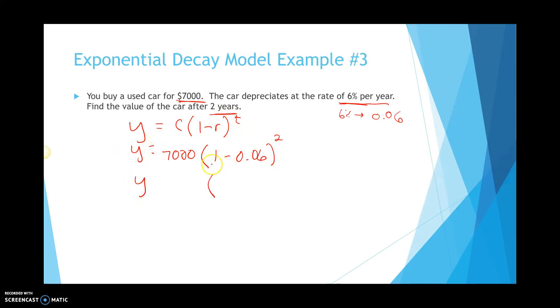Again, I'll subtract 1 minus 0.06 to get 0.94 raised to the second power. And then we would multiply that by 7,000. And you're going to get y is going to be approximately $6,185. If you rounded it to the nearest penny, it's going to be $0.20. So, $6,185.20 after about two years. So, that is it for the section. And we'll practice this in class.